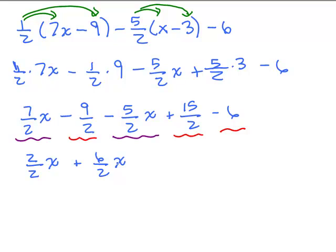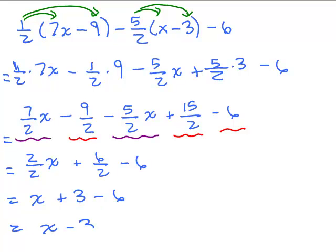Those of you who do it in your head might write 3. That's just 6/2 minus 6. So I have here x plus 3 minus 6. Last thing is combining the 3 minus 6 — those are the like terms — giving us x minus 3, and that's it.